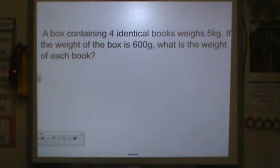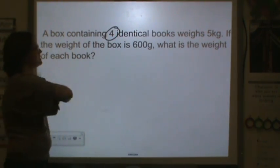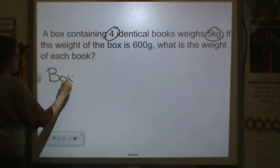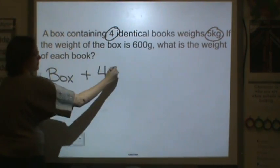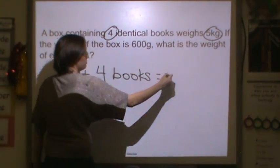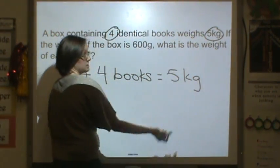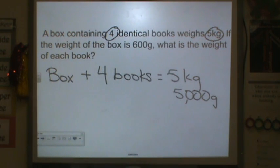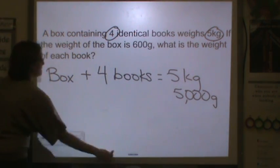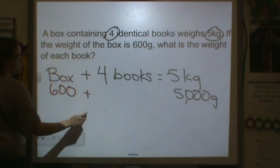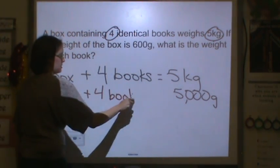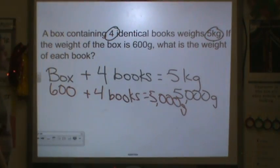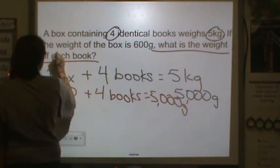Next problem. If you need to pause to write, please do that. A box containing four identical books weighs five kilograms. Remember, five kilograms is equal to 5,000 grams. If the weight of the box is 600 grams, they're telling us the box is 600 grams plus four books equals 5,000 grams. They want to know the weight of each book.